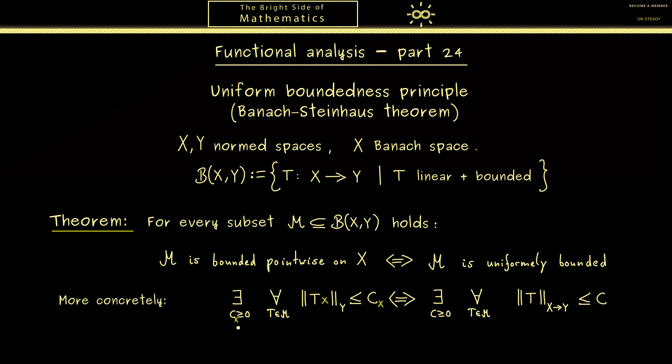Hence we need the quantifier for all x in X here in front. So please recall this quantifier here on the right hand side is hidden in the operator norm so it's after choosing the constant C. Now the Banach-Steinhaus theorem tells us that both notions are actually the same as long as we have a Banach space on the left hand side.